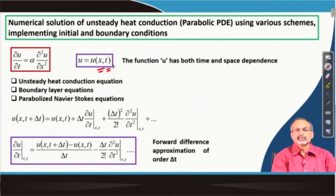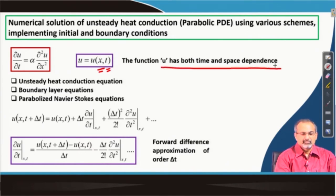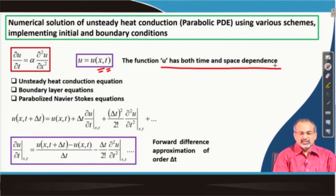Earlier in the elliptic equation category, we have seen that the dependent variable is dependent on one or more than one spatial coordinate, so the independent variables were just spatial coordinates with no connection with time. Now, since we have a partial derivative in time, we would like to see how to represent that partial derivative in an approximate form, and we continue with the Taylor series approach like we did before.